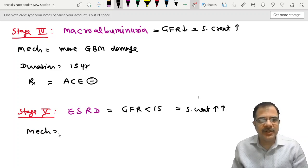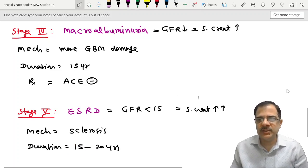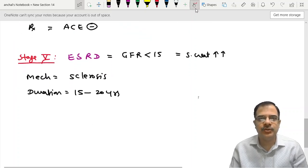The mechanism of this condition is now sclerosis is taking place. And the duration of diabetes after which it is developed is 15 to 20 years. That means uncontrolled sugars will affect the kidney within 20 years of diagnosis.